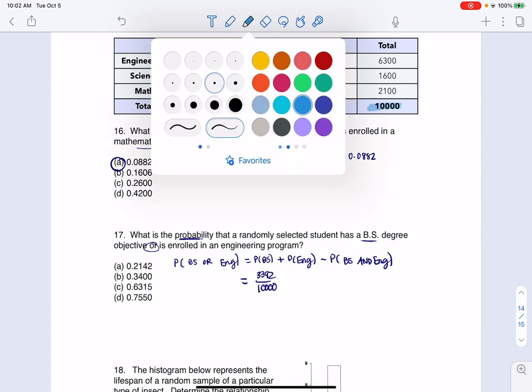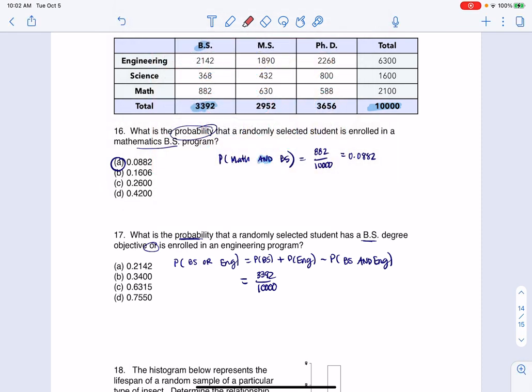And then let me color code this next. We're going with the engineers. There are 6,300 out of the 10,000.